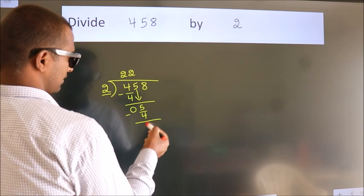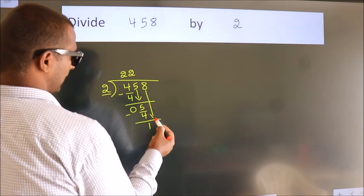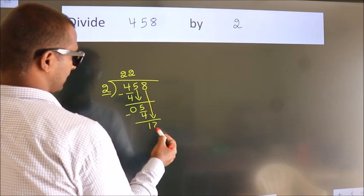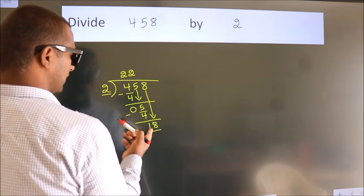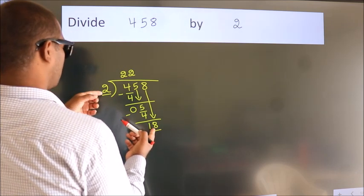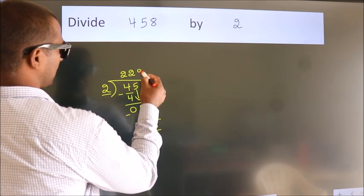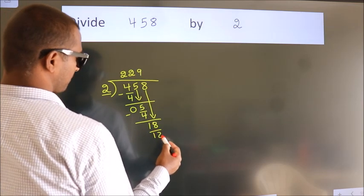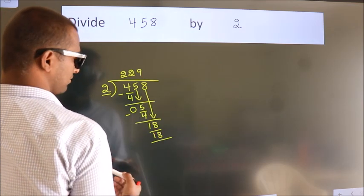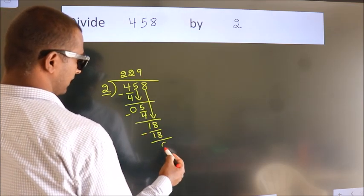After this, bring down the beside number. So 8 down. So 18. When do we get 18? In 2 table, 2 9s, 18. Now we subtract. We get 0.